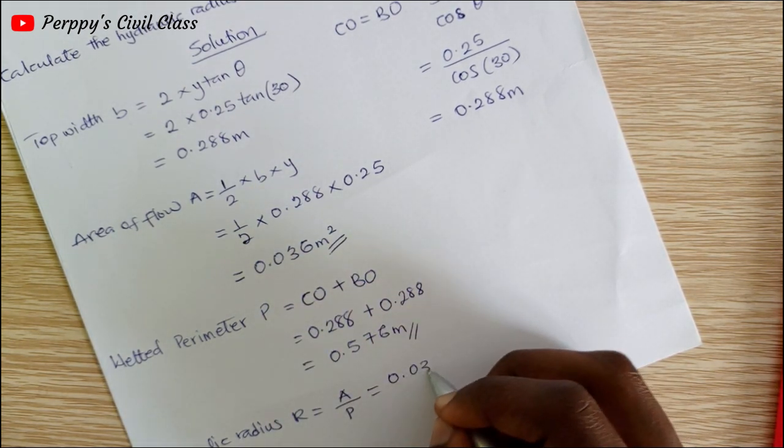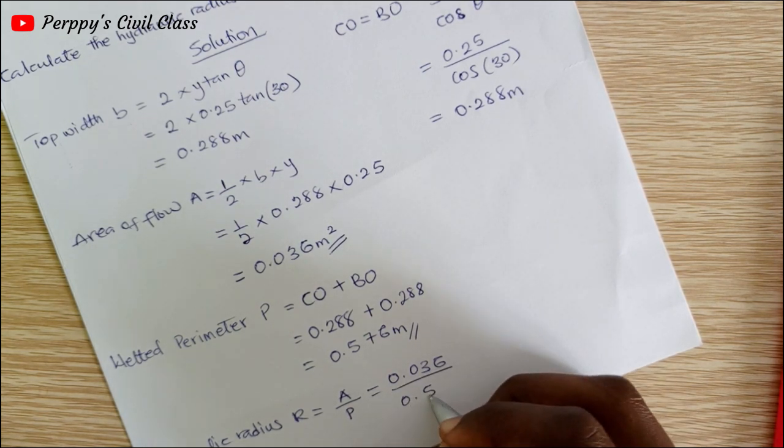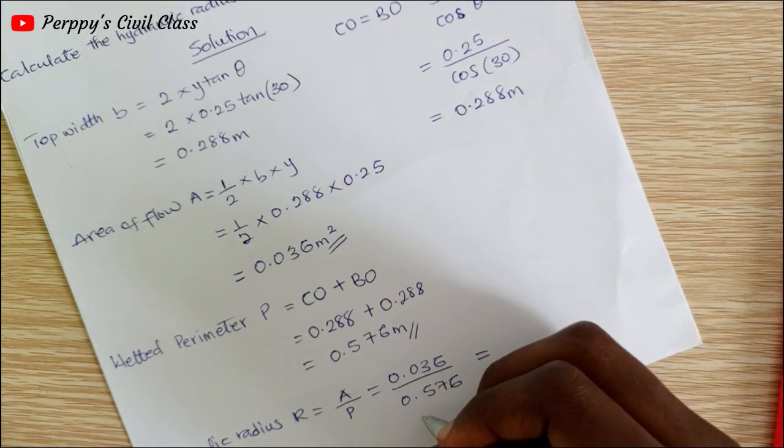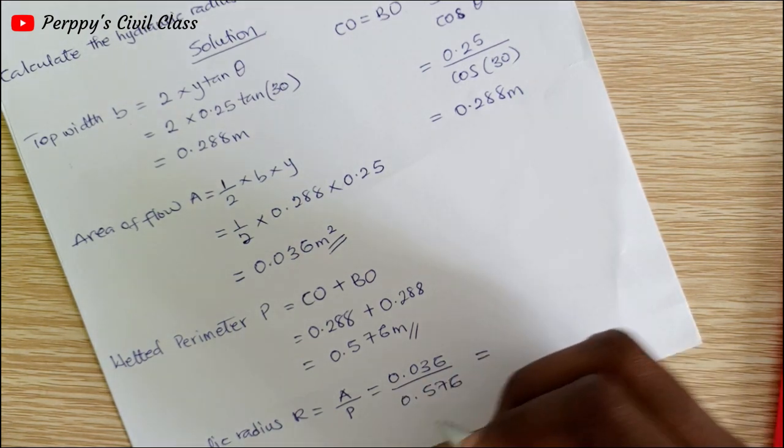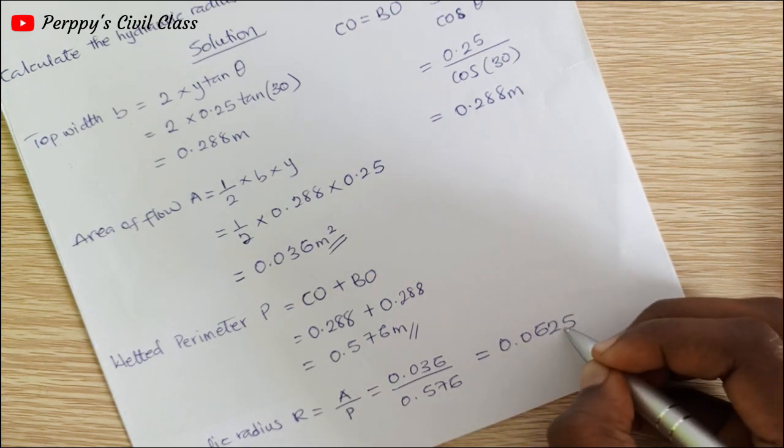Area of flow is 0.036 divided by wetted perimeter 0.576. Dividing the area of flow by the wetted perimeter, I'm going to get 0.0625 meters.